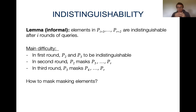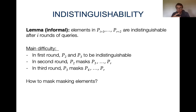Similarly, in the third round, P3 must mask the differences between elements from P4 to P_R. The main difficulty is that in the first round we must mask elements from P2 and P3, while these same elements will then have to mask other elements in subsequent rounds. How do we mask differences of elements that themselves need to mask other elements? That is the central challenge in the construction.